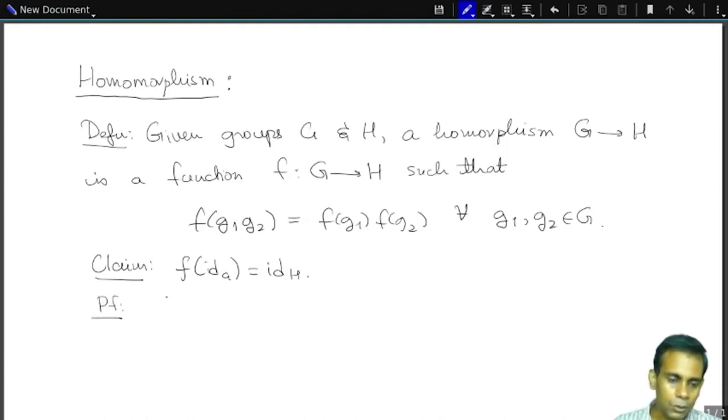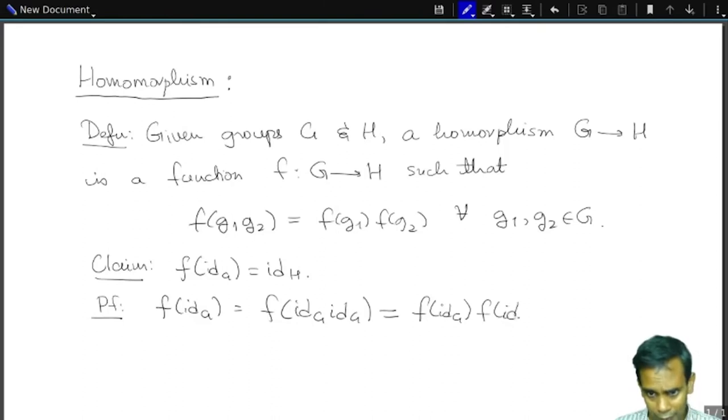Well, so F of identity of G is equal to, well, identity of G is identity of G into identity of G, right? So it is equal to F of identity of G into identity of G. And then using this homomorphism property here, what we get is F of identity of G into F of identity of G.